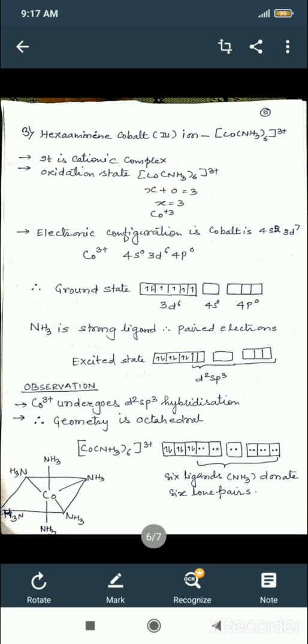New hybrid orbitals will be d²sp³. This means there is d²sp³ hybridization. If d²sp³ hybridization occurs, six ligands donate six lone pairs, and the geometry is octahedral in shape.